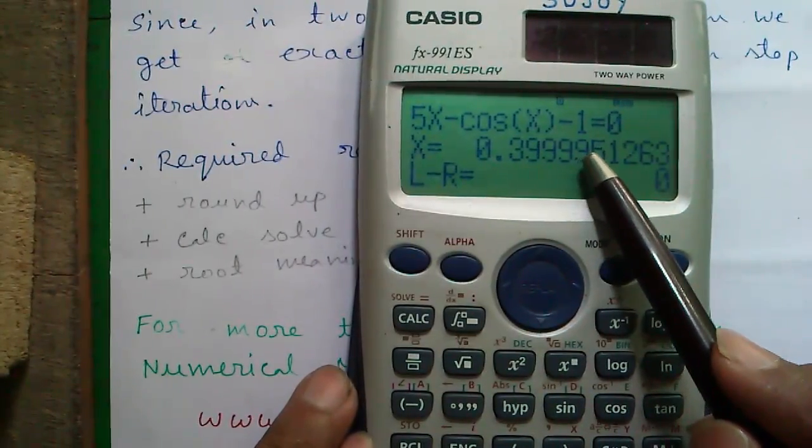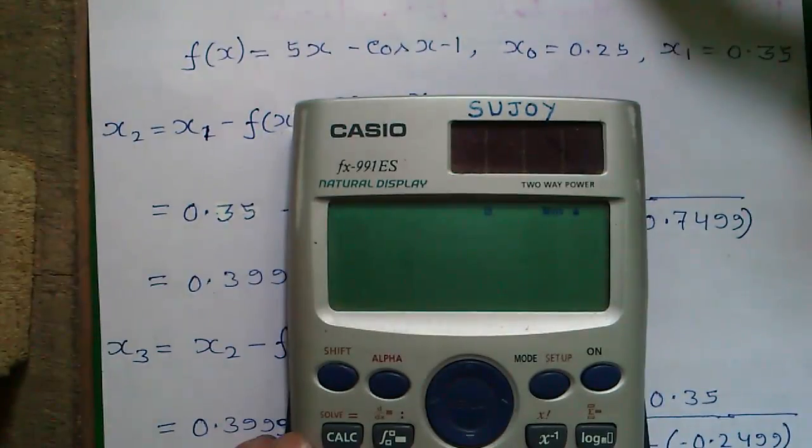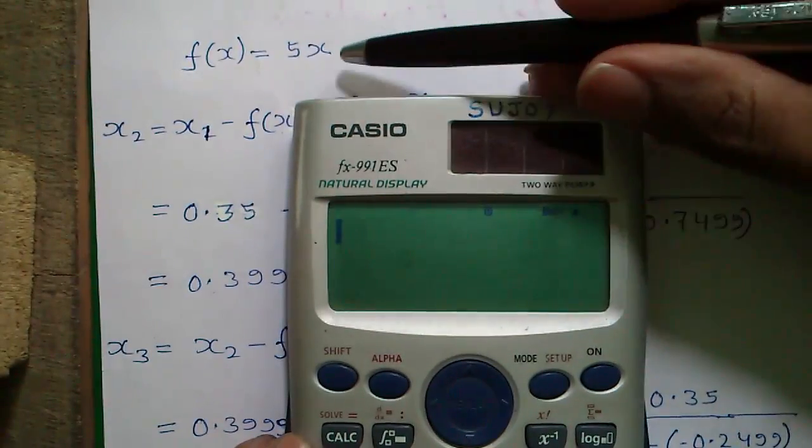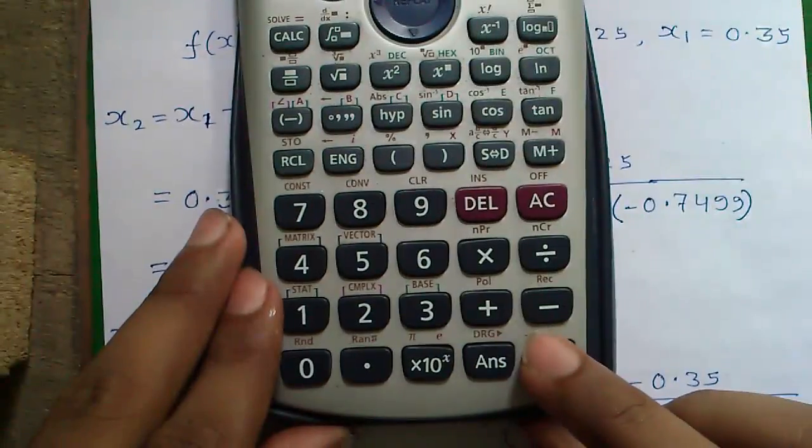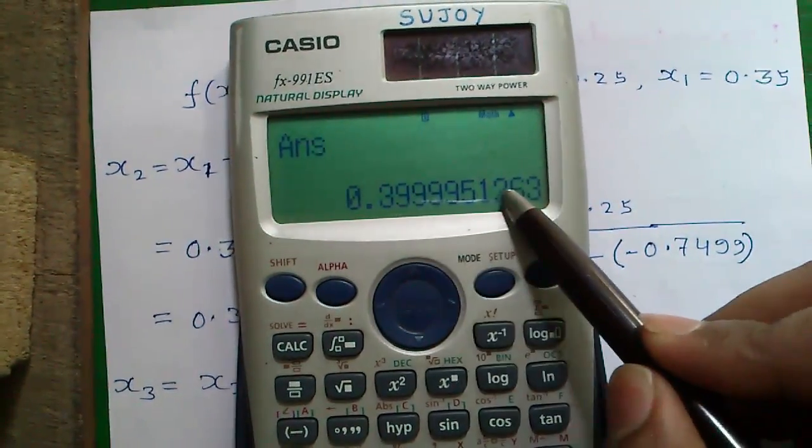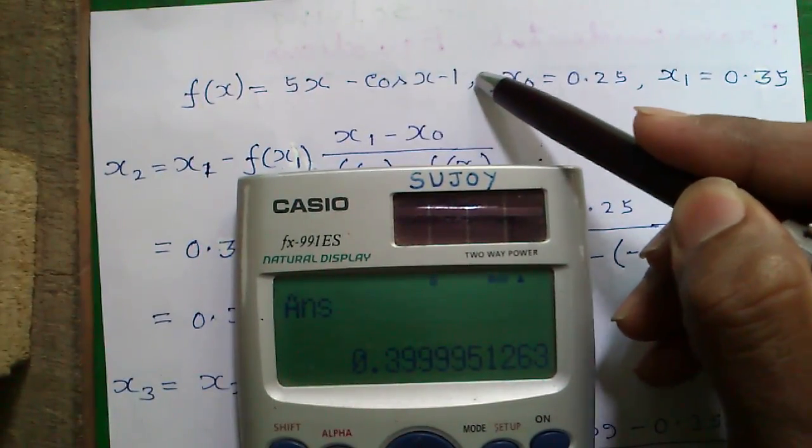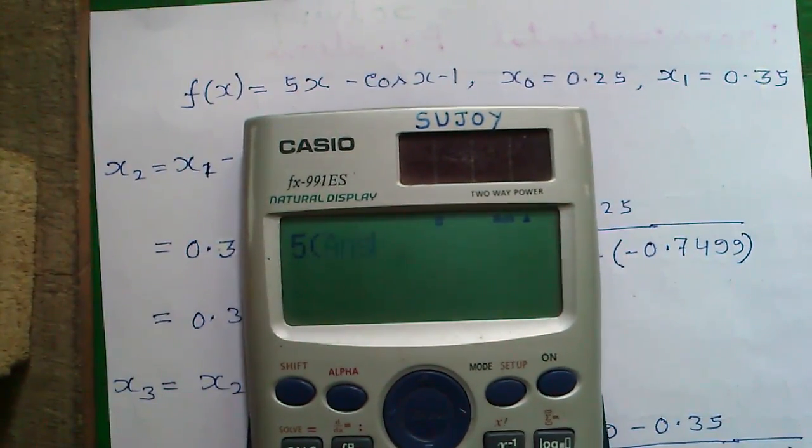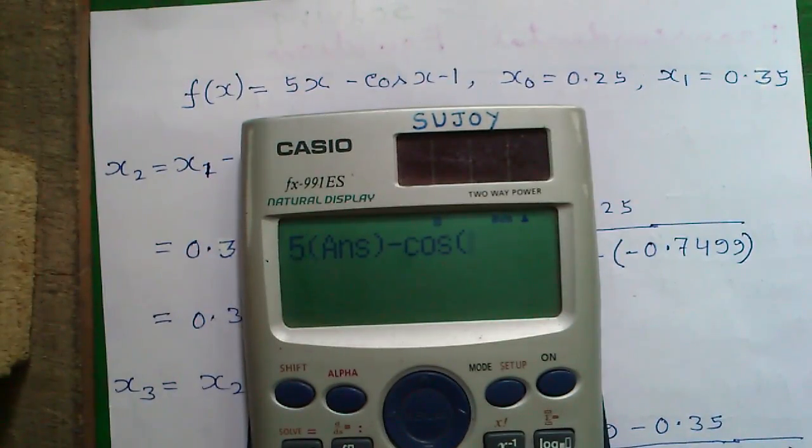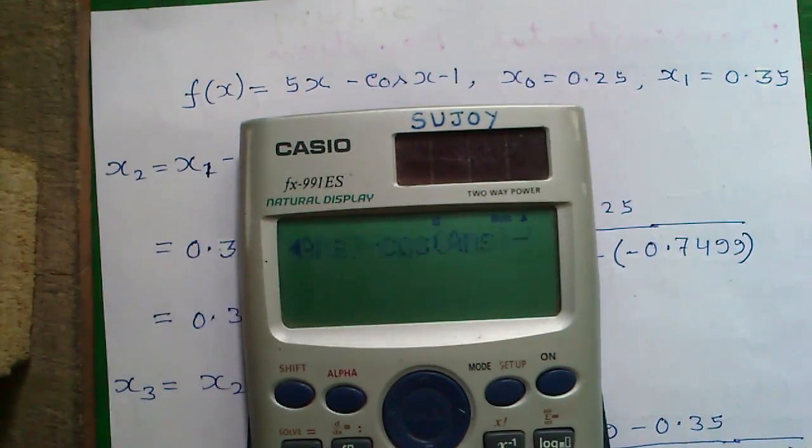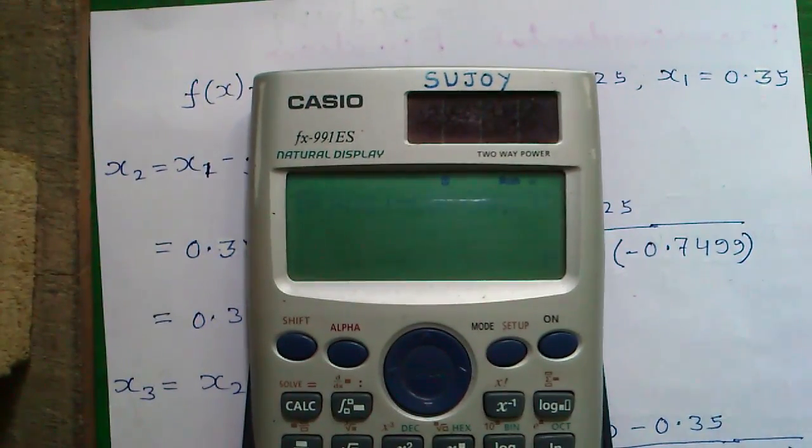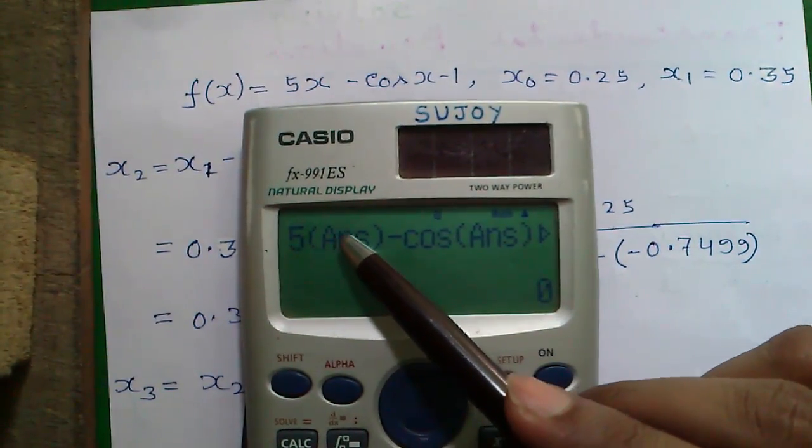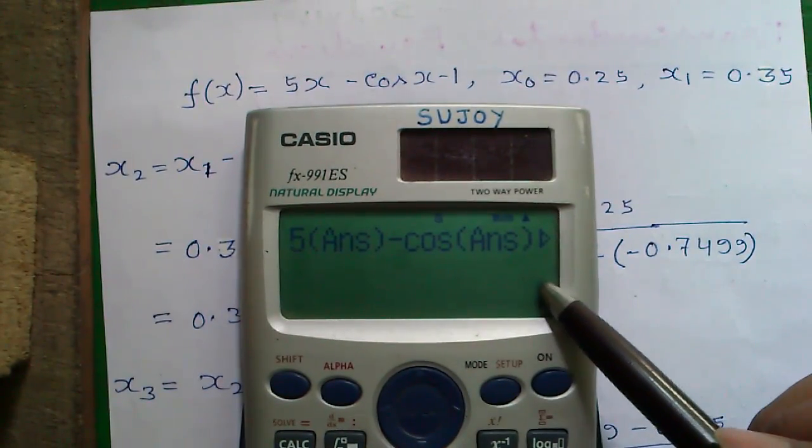Isn't it cool? The definition of root is the value substituted for the unknown quantity, here x, satisfies the equation is called the root. That means you will substitute our answer that is press answer and equals to this value in place of x, you will get equals to or almost equals to 0. So let's try it. 5 into answer minus cos into answer minus 1 and press equals to. That is equals to 0. That is the meaning of root. We substitute our obtained value or our root value in place of x and we got exactly equals to 0.